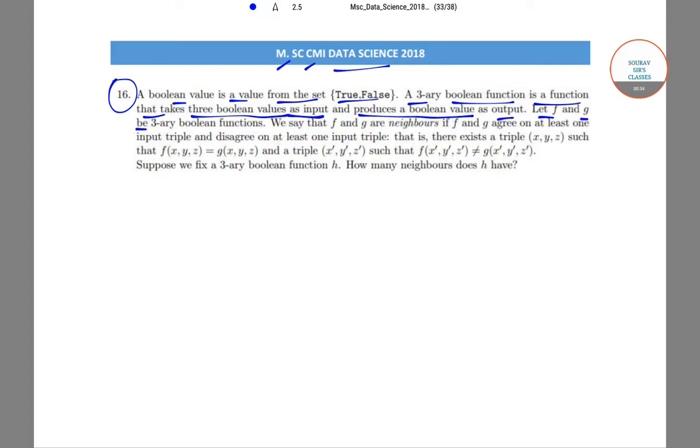Now let f and g be 3-ary boolean functions. We say that f and g are neighbors if f and g agree on at least one input triple and disagree on at least one input triple.